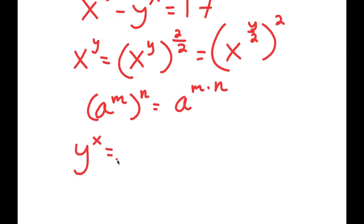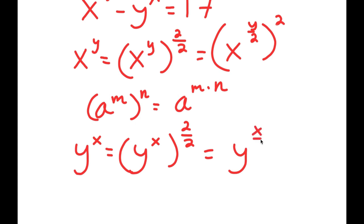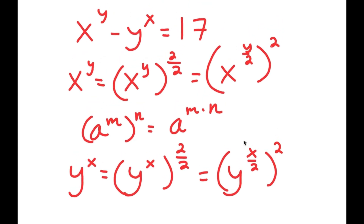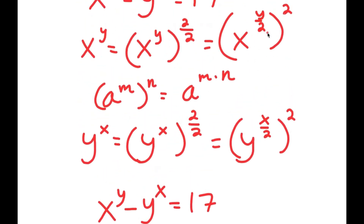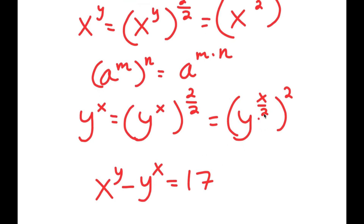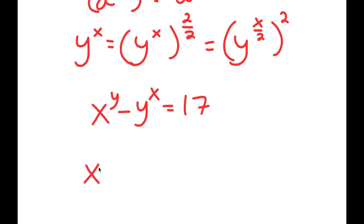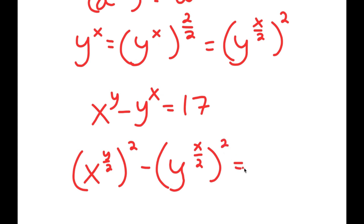Now, y to the power of x, I can also change this up. So y to the power of x, I can rewrite that as y to the power of x times 2 over 2, and this I can rewrite as y to the power of x over 2, to the power of 2. Now from here, remember my original equation was x to the power of y minus y to the power of x equals 17. I can replace x to the power of y with x to the power of y over 2, to the power of 2, and y to the power of x with y to the power of x over 2, to the power of 2. So now I get: x to the power of y over 2, to the power of 2, minus y to the power of x over 2, to the power of 2, is equal to 17.